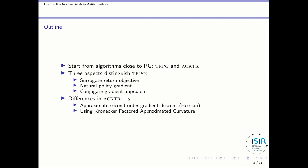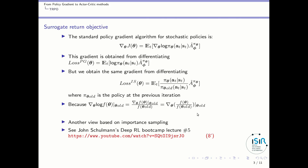Then we will see the differences with respect to ACTOR, where ACTOR approximates a second-order gradient descent using the Hessian, and uses the Kronecker-factored approximated curvature to perform this computation efficiently. So let's start with TRPO.